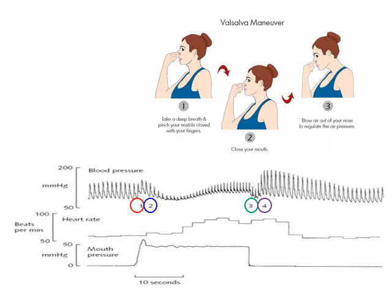Note that while arterial blood pressure changes through these phases, heart rate also changes correspondingly. So we have one curve for mouth pressure changes, changes reflected in arterial blood pressure, and changes in heart rate.